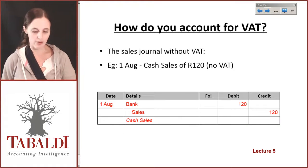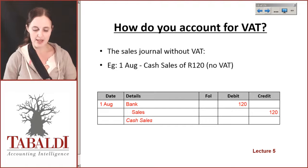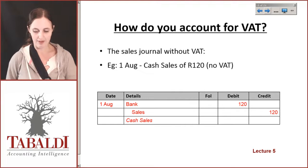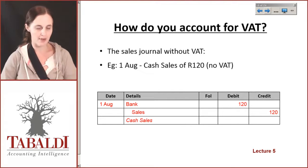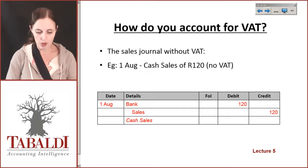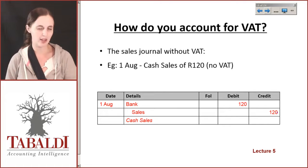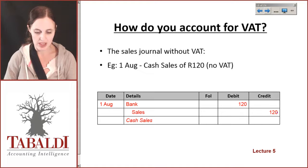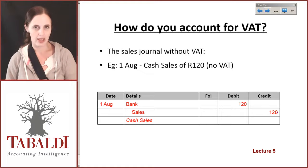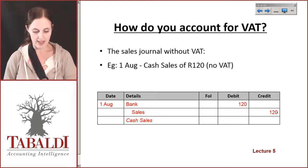So how do we account for VAT? At the moment, a sales journal without VAT would look like this, and this is what we've covered up to now. We would credit sales with 120 and debit bank with 120 if these were cash sales with no VAT.